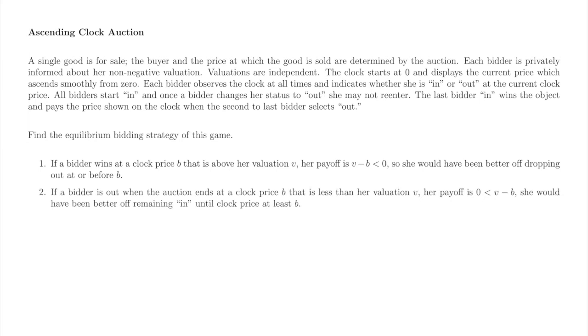Second, a bidder who is out when the auction ends at a clock price B below her valuation is worse off than if she had won the auction at the clock price B. Therefore, a bidder should remain in as long as the clock price is less than her valuation.